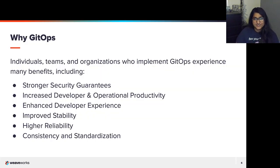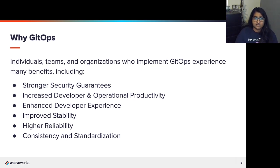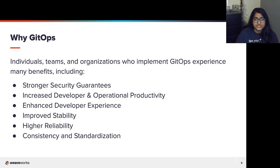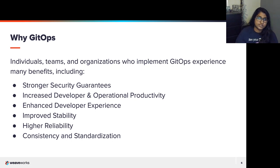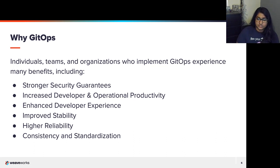Why GitOps? There are so many benefits — individuals, teams, and organizations who implement GitOps experience stronger security guarantees, increased developer and operational productivity, enhanced developer experience, improved stability, higher reliability, and consistency in standardization. I myself, at my previous company, was on a team that implemented GitOps using Flux and we did see these benefits. Because of GitOps's unique ability to treat everything as code, it creates a direct impact on security — if all configuration and security policy is treated as code, then everything can be held in version control, changes can be reviewed and handled in an automated way. There's no manual processes, so you're less likely to be at work on a weekend.